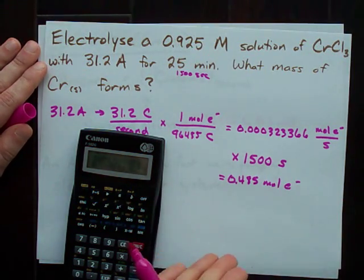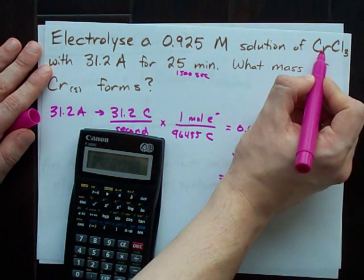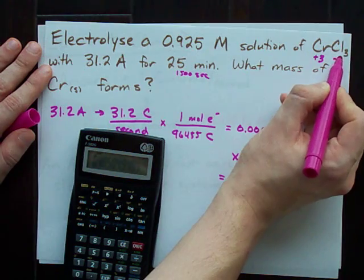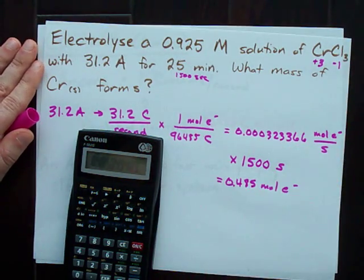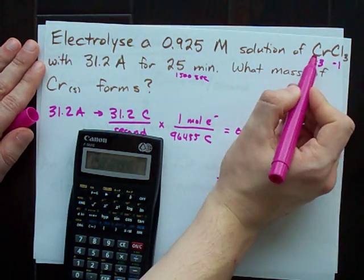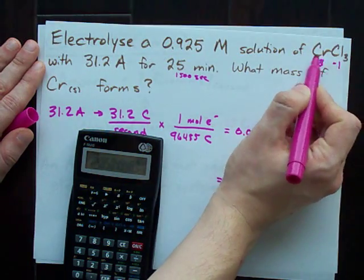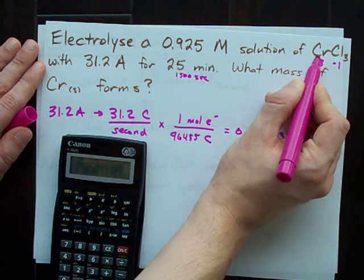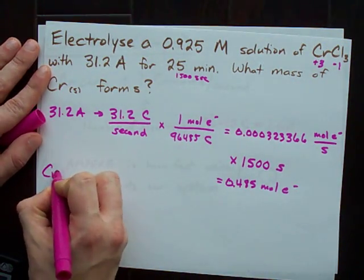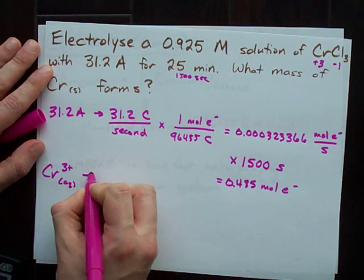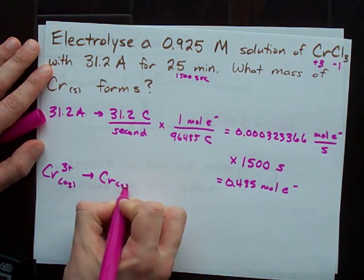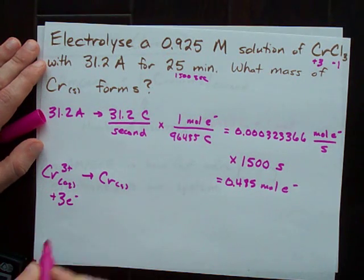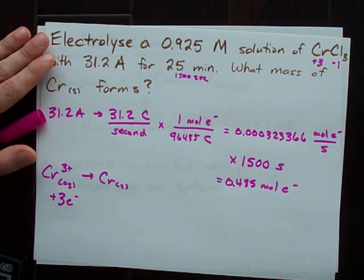This is where we get into the chemistry bit. This chromium has a charge of plus 3. That's because each chlorine has an oxidation state of minus 1 each, and this is a neutral compound when they're together. So that means in order to go from chromium 3 plus, which is probably aqueous, to solid chromium, I'm going to need to pump in 3 electrons for every single chromium atom.